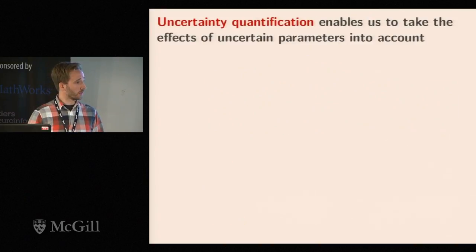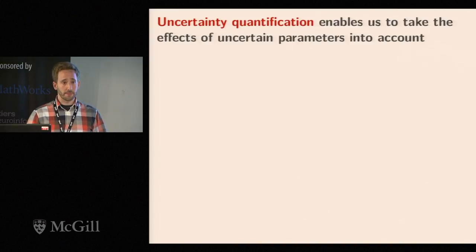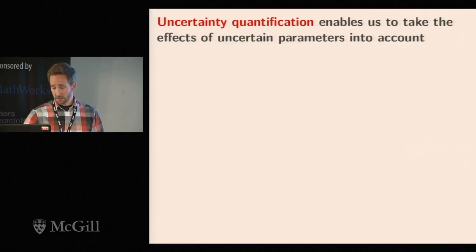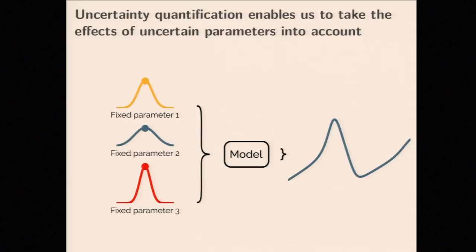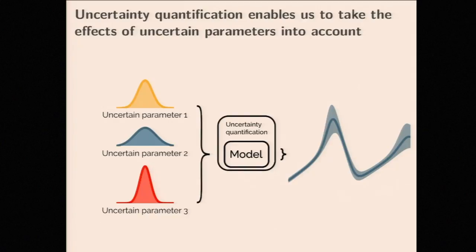All of this leads to the fact that parameters of our models are often best described by a distribution rather than a fixed value — this is where uncertainty quantification enters. When we perform an uncertainty quantification, we can take the effect of uncertain parameters into account. Traditionally, we choose the mean from a measurement and get a single deterministic result. With uncertainty quantification, we take the entire parameter distribution into account and instead get a range of possible values for our model.